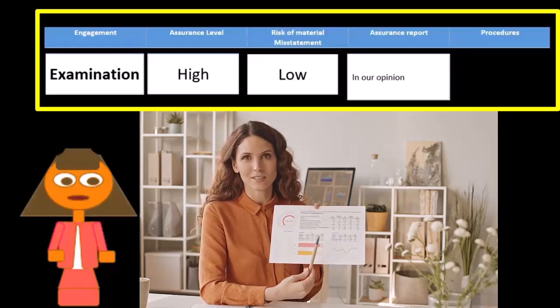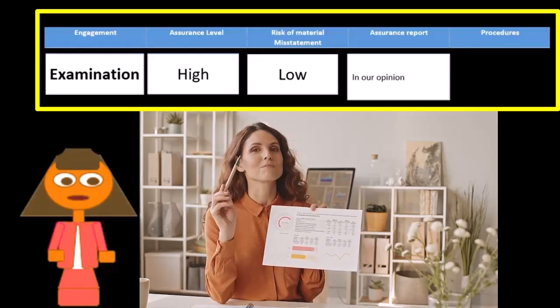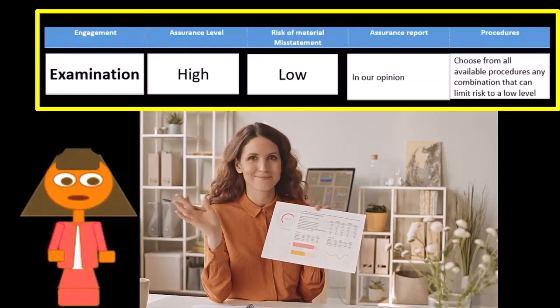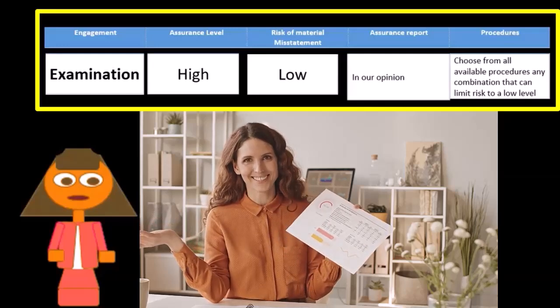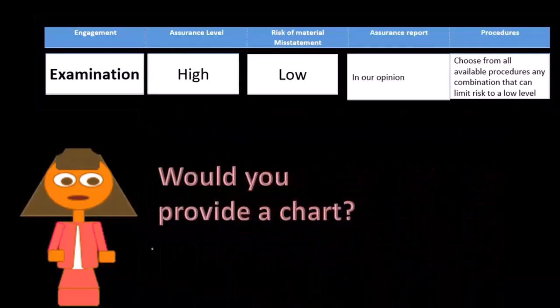For the assurance report, we're going to issue a report for these things. Usually if we're talking about an audit, somewhere in the standard report that we'll take a look at later, it's going to say in our opinion. For procedures, we're going to choose from all available procedures, any combination that can limit risk to a low level.